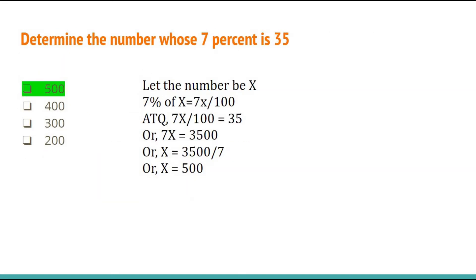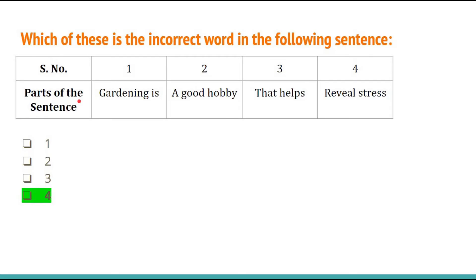Determine the number whose 7% is 35. Let the number be x. 7% of x = 7x/100 = 35. Cross-multiplying: 7x = 3500, so x = 500. Option A, 500, is the right answer. Next, which is the incorrect word in 'Gardening is a good hobby that helps reveal stress'? Instead of 'reveal' it should be 'relieve stress' — so 'reveal' is the incorrect word.